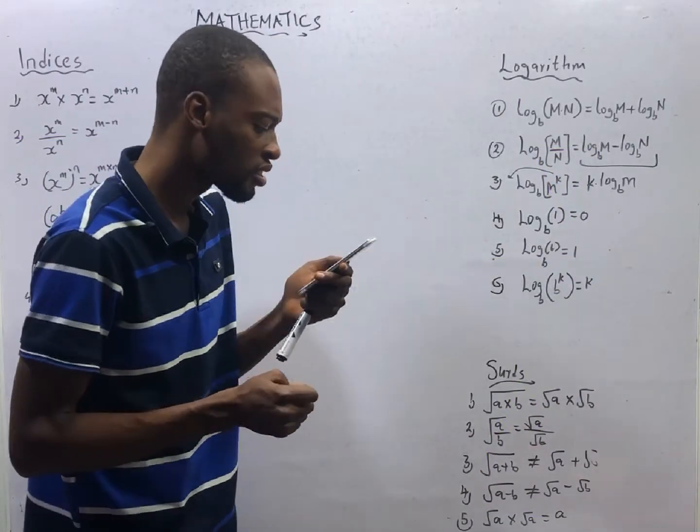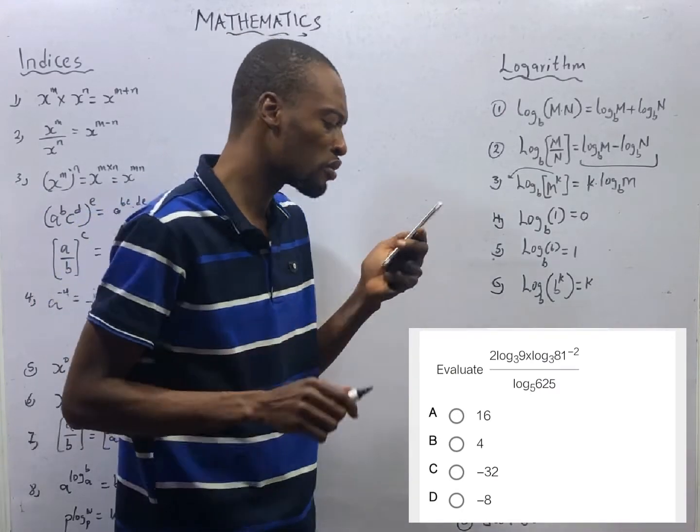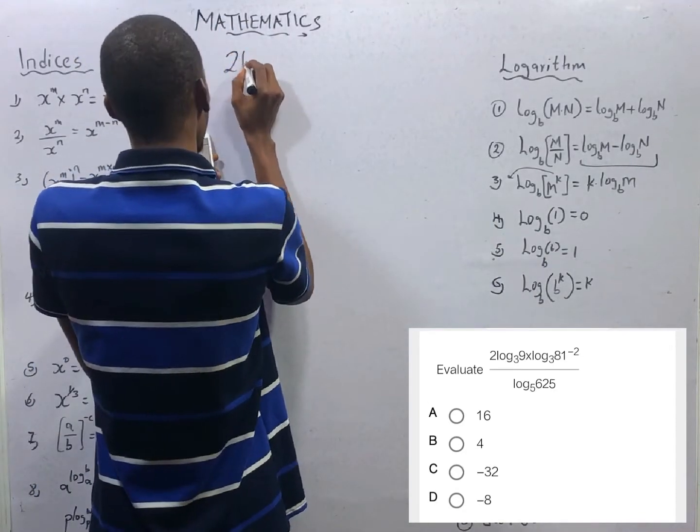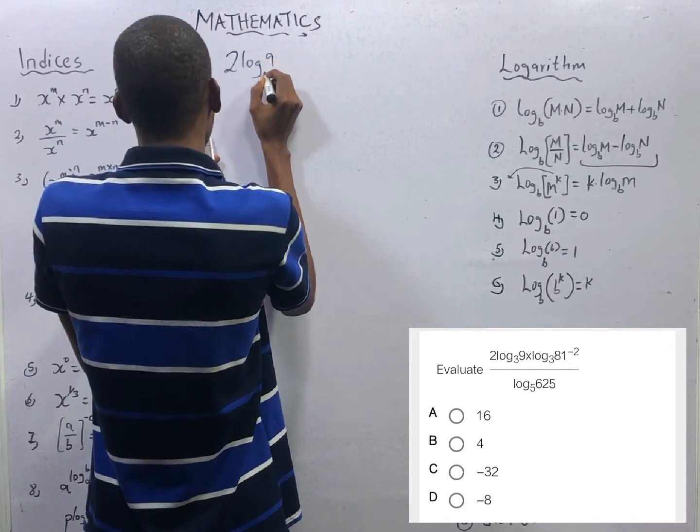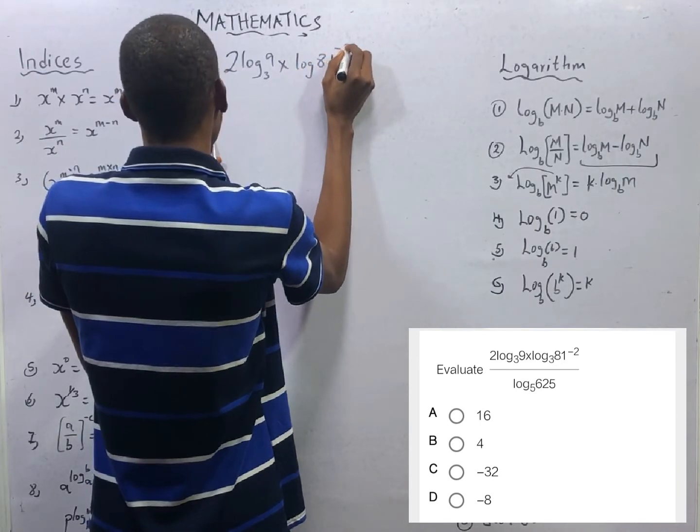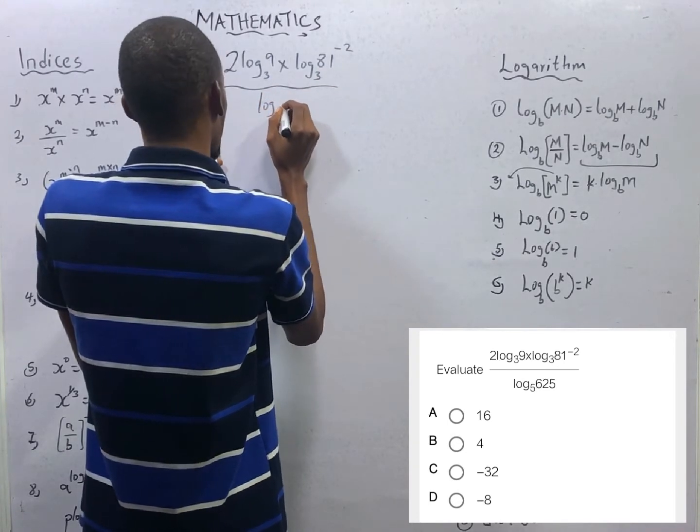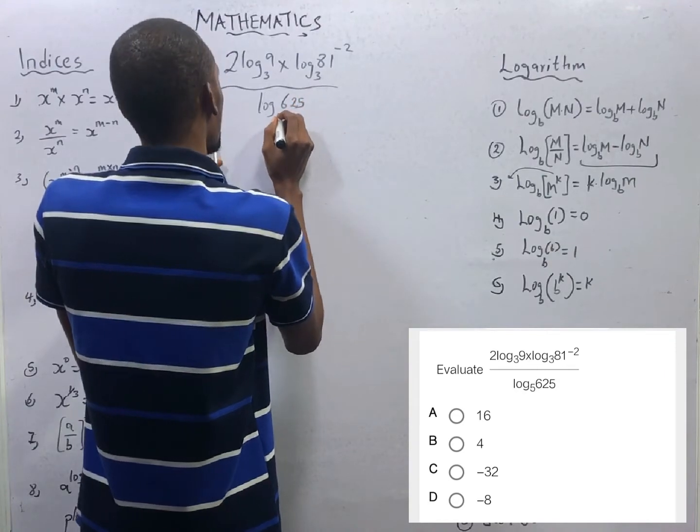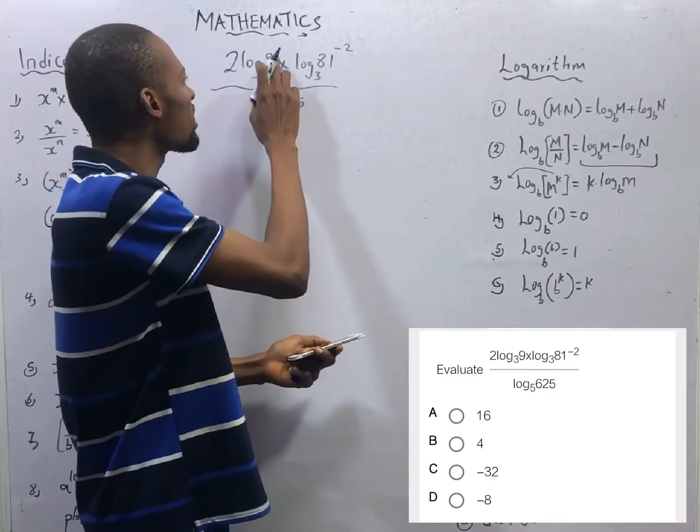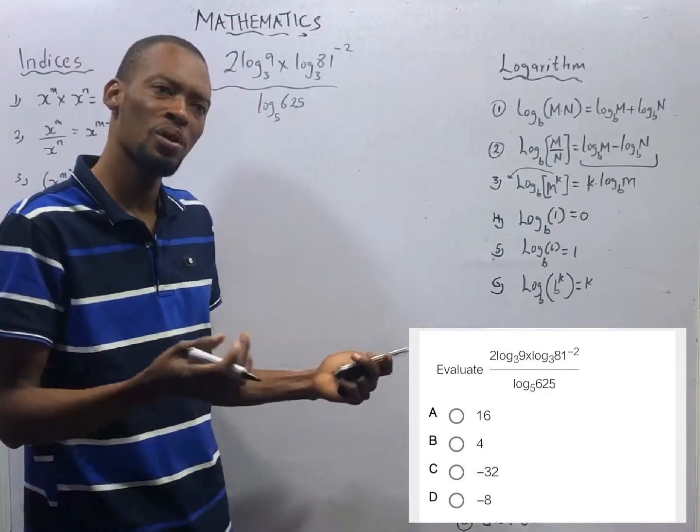2 log 9 to base 3 times log 81 raised to the power of minus 2 to base 3 over log 625 to base 5. It looks complex, but it's something you can solve easily. From here, we know that if we are able to make the number here and the base the same, life can get very very easy for us. What do I mean by that? This is the same thing as 2 log of 3, 9 is 3 raised to the power of 2. We have not changed anything.